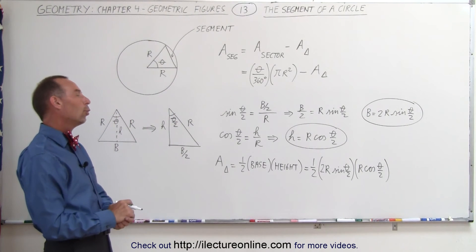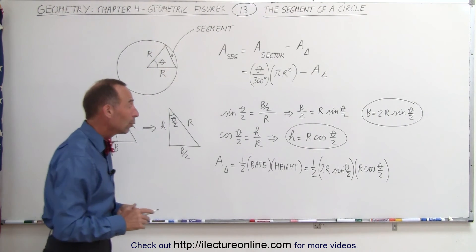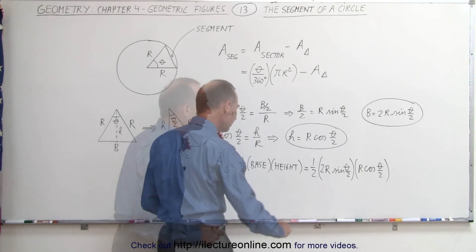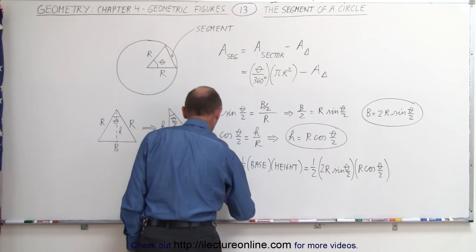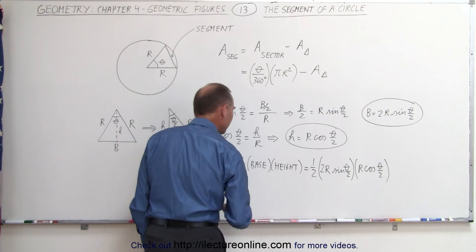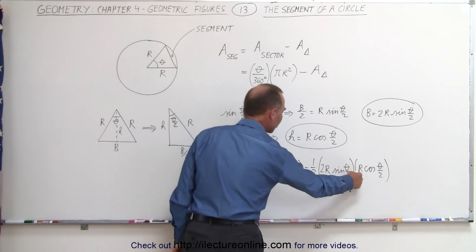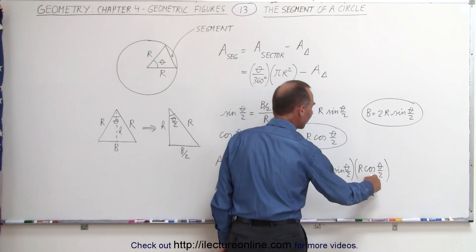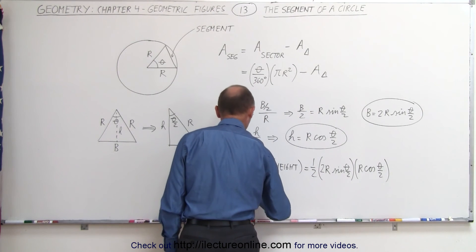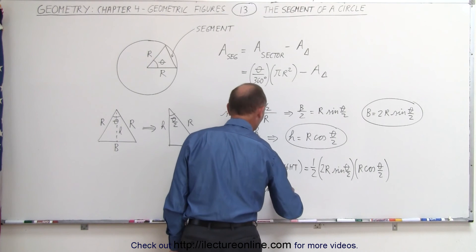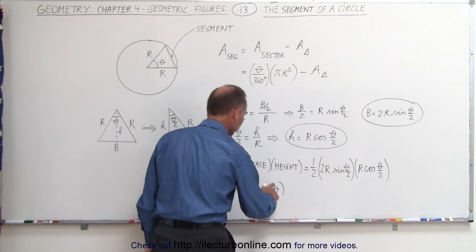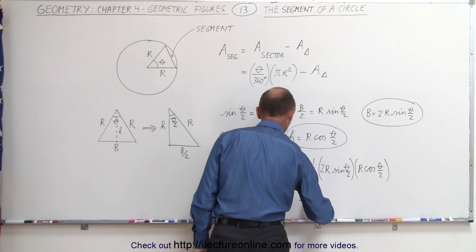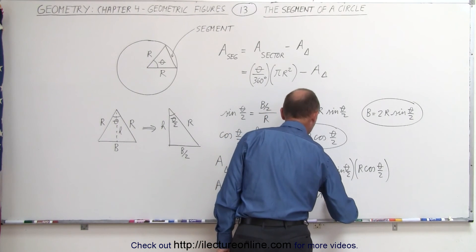We can simplify this using a trigonometric identity: sine of an angle times cosine of the same angle equals one half times the sine of twice that angle. So the area of the triangle simplifies as follows: the one half and 2 cancel, r times r becomes r squared, and sine(theta/2) times cosine(theta/2) becomes one half times sine(theta). Ultimately, the area of the triangle equals one half r squared times sine(theta).